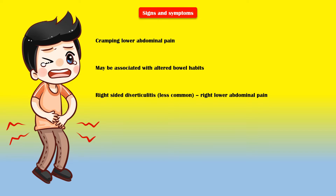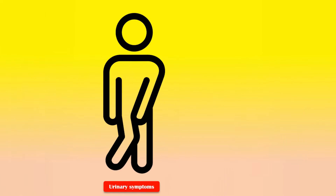Patients will also have nausea and vomiting, constipation, fever, bloating, and flatulence. A small percentage of patients may also have urinary symptoms, including urinary frequency, urgency, and pain during urination.